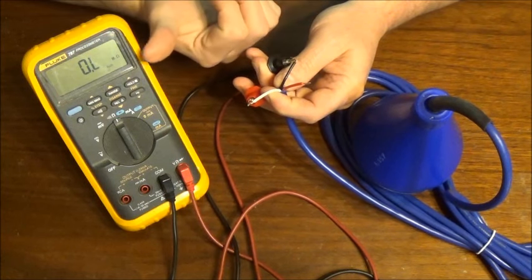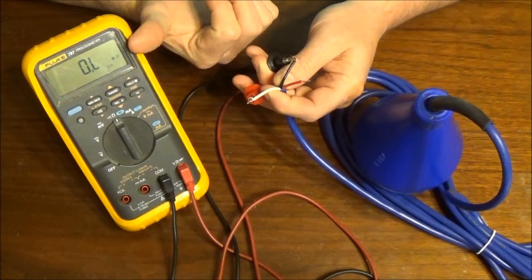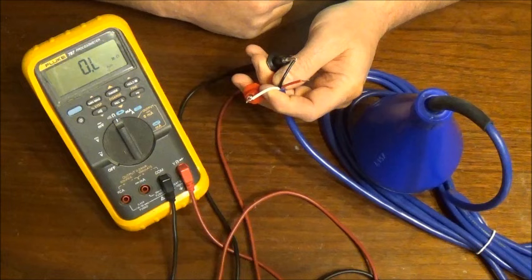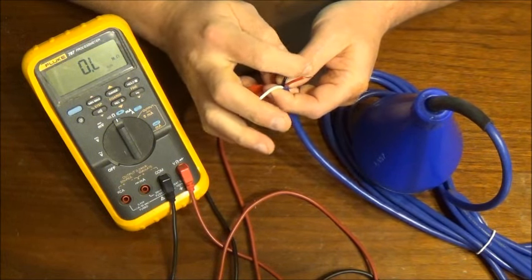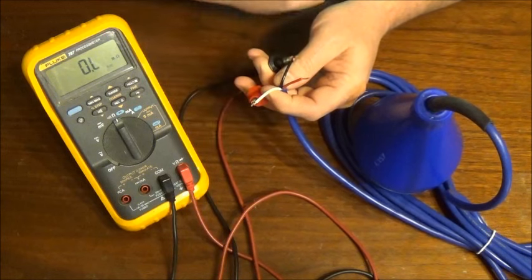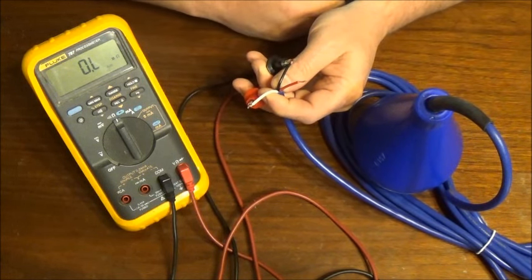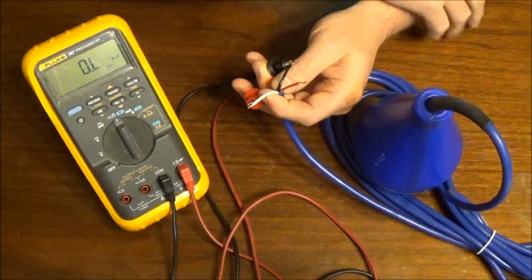You measure across those leads and you measure overload. That's fine if the float should be reading as normally open in the down position. So let's say that it is. Now we've got our leads measured across the float.